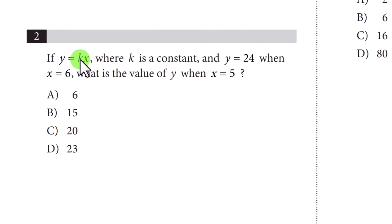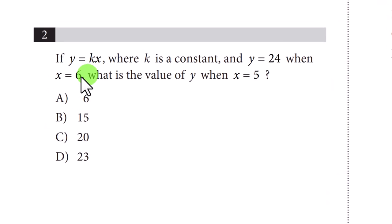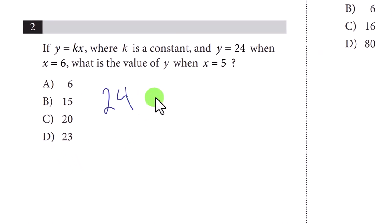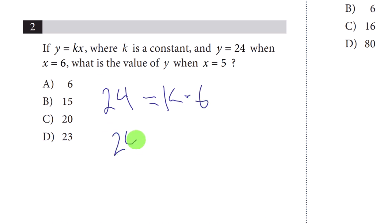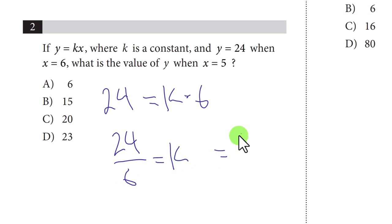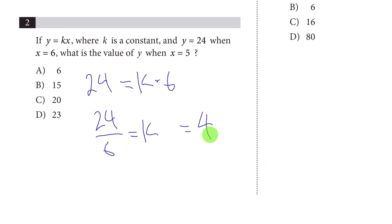Question two: you have a missing constant k. They provide the y value and x value, so plug those into the equation to figure out k. We get 24 equals k times 6, so k equals 24 divided by 6, which is 4. Now x is 5, so y equals 4 times 5, which gives you 20. The answer is C.